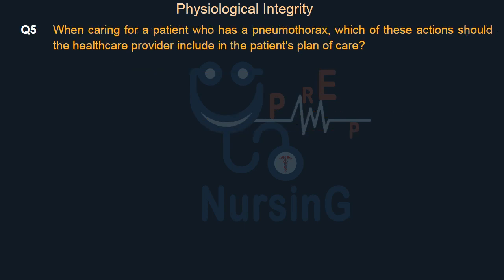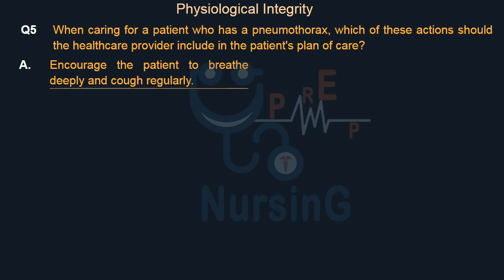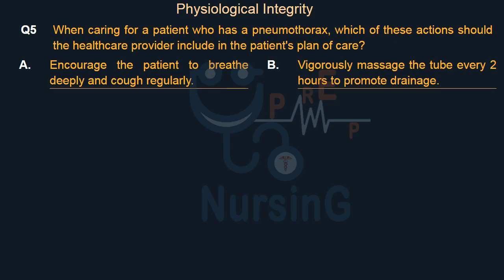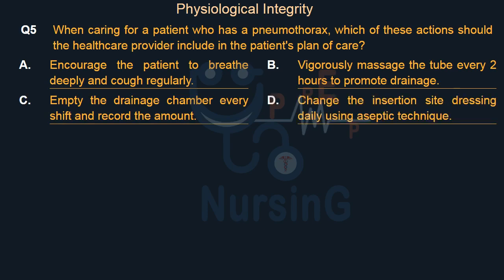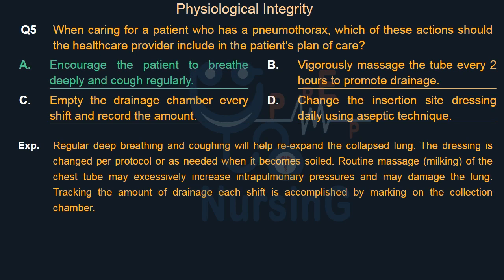When caring for a patient who has a pneumothorax, which of these actions should the healthcare provider include in the plan of care? Option A: Encourage the patient to breathe deeply and cough regularly. Option B: Vigorously massage the tube every two hours to promote drainage. Option C: Empty the drainage chamber every shift and record the amount. Option D: Change the insertion site dressing daily using aseptic technique. The right answer is Option A. Regular deep breathing and coughing will help re-expand the collapsed lung. The dressing is changed per protocol or as needed when soiled. Routine milking of the chest tube may excessively increase intrapulmonary pressures and may damage the lung. Tracking drainage each shift is accomplished by marking on the collection chamber.